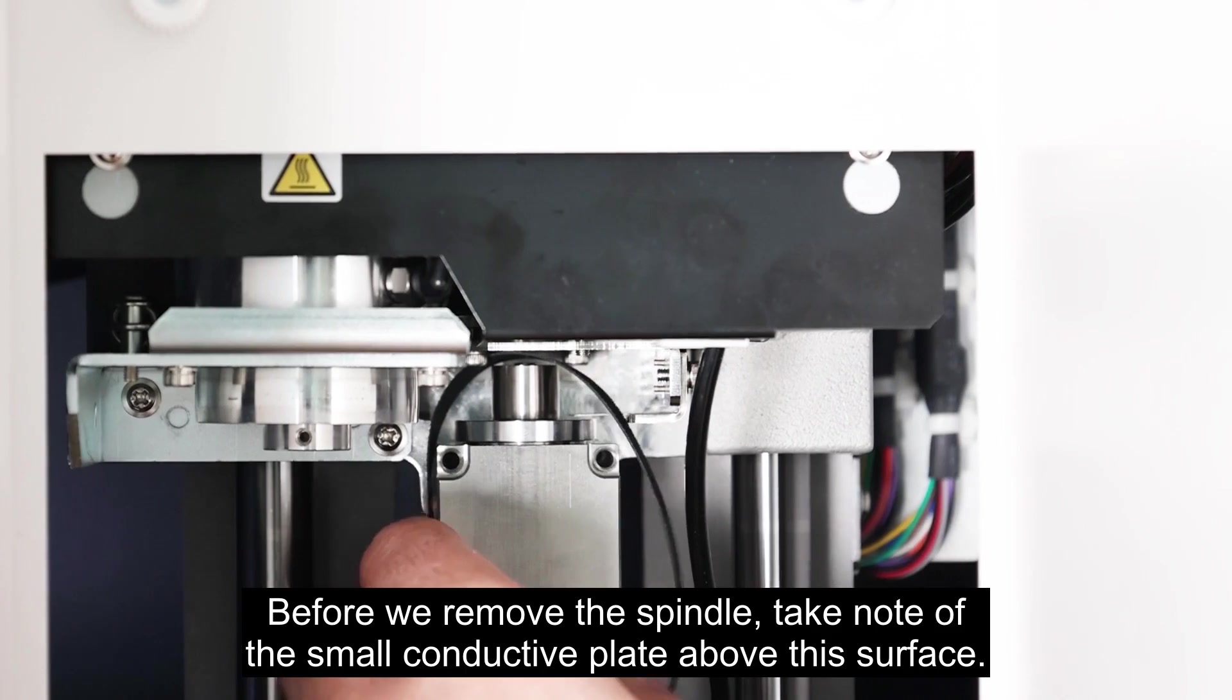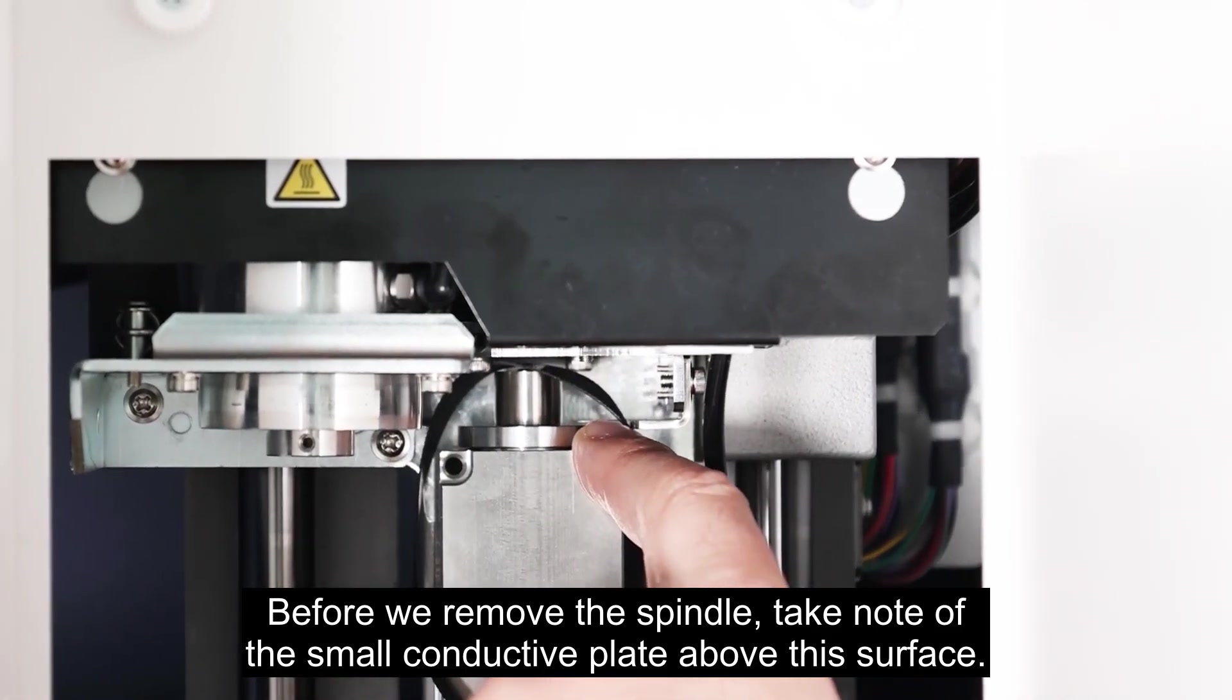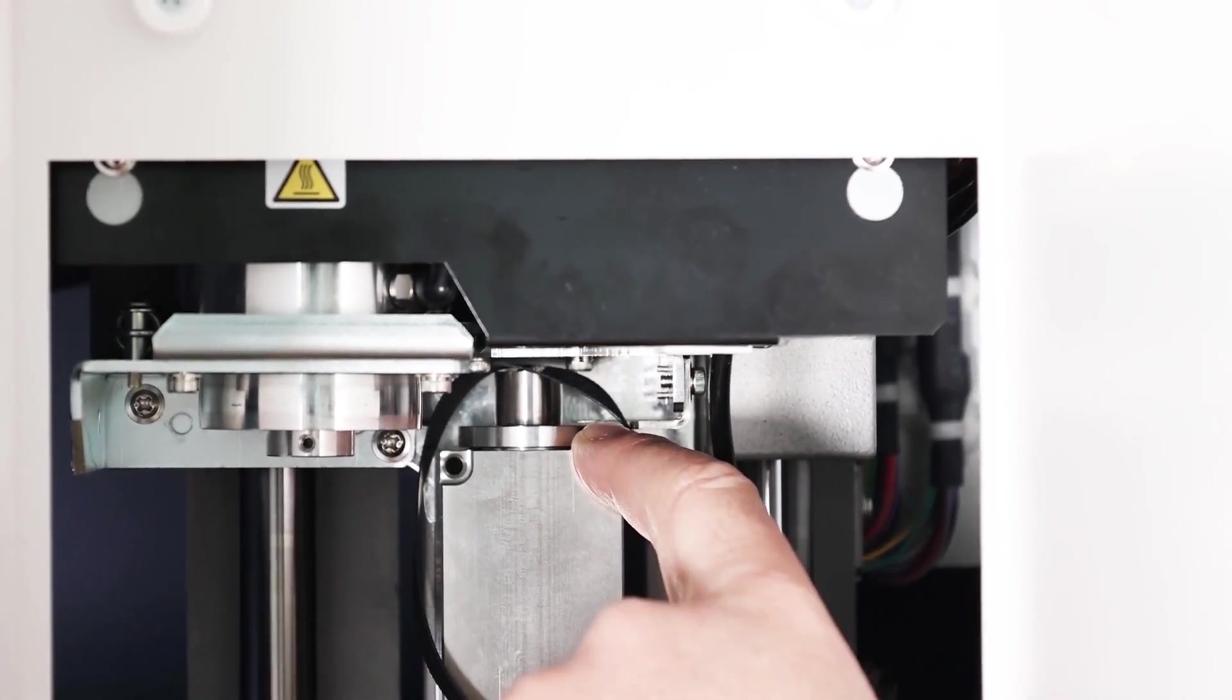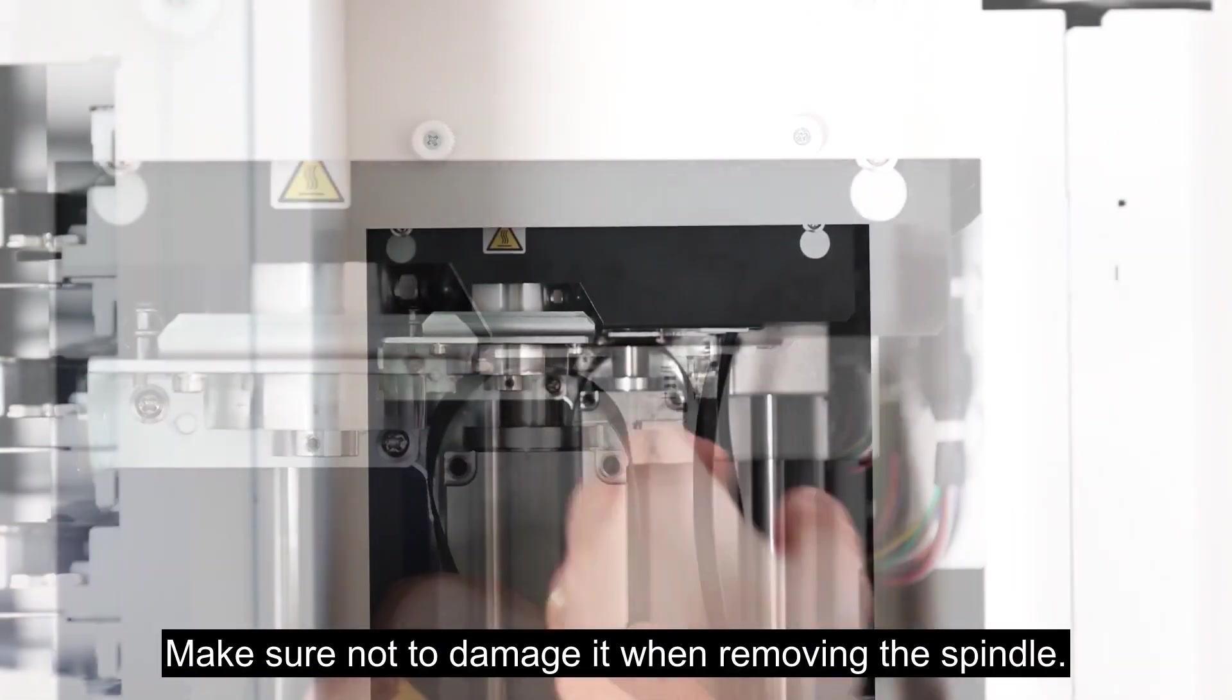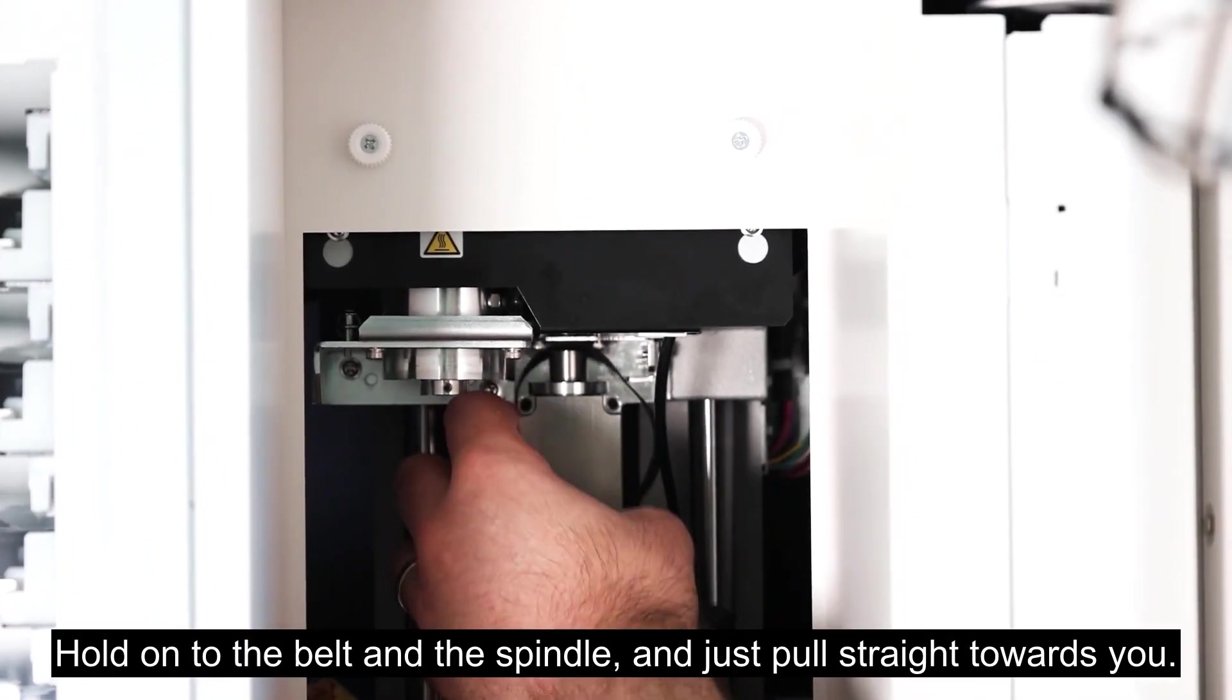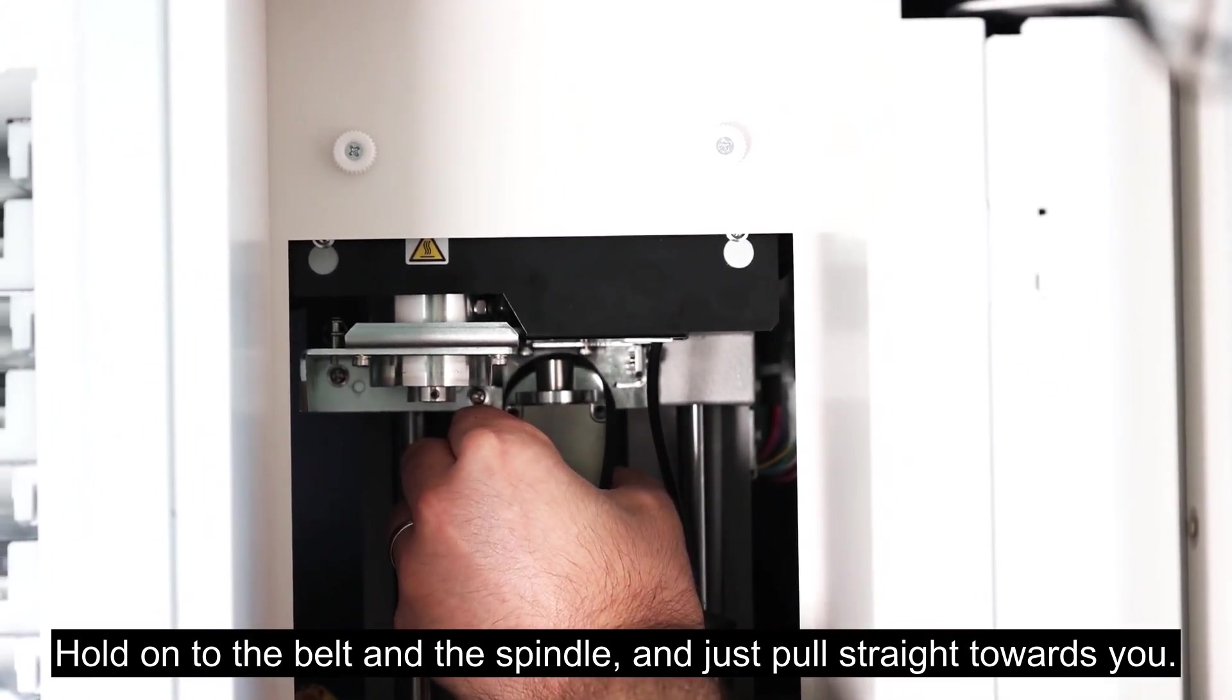Before we remove the spindle, take note of the small conductive plate above this surface. Make sure not to damage it when removing the spindle. Hold on to the belt and the spindle and just pull straight towards you.